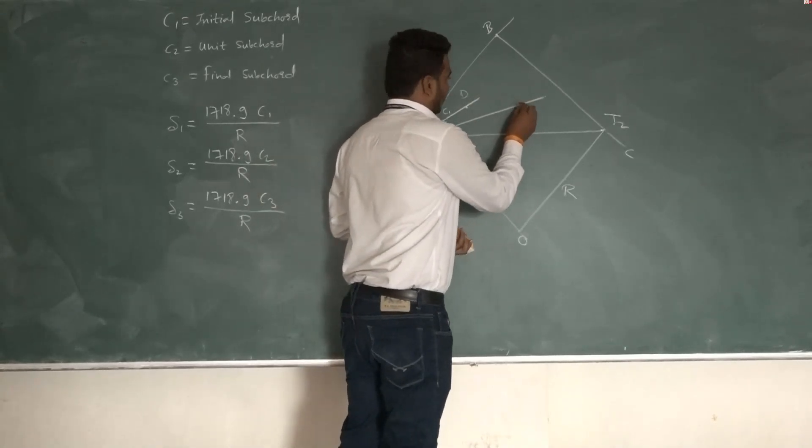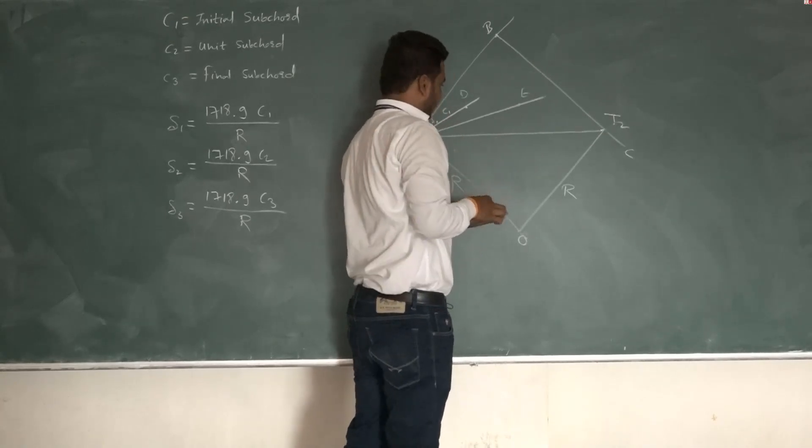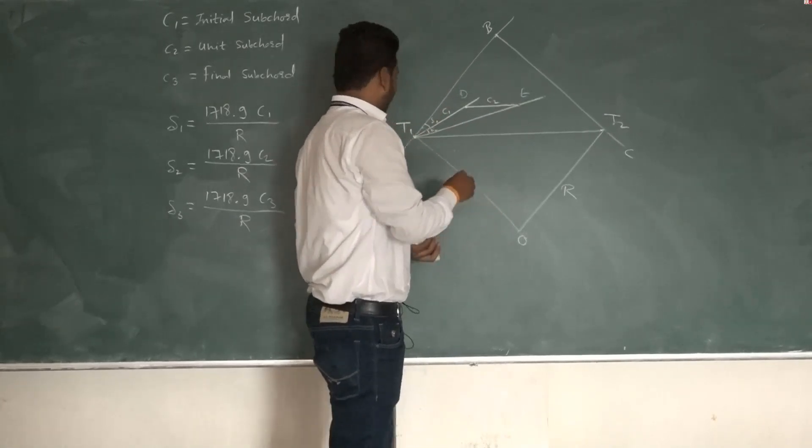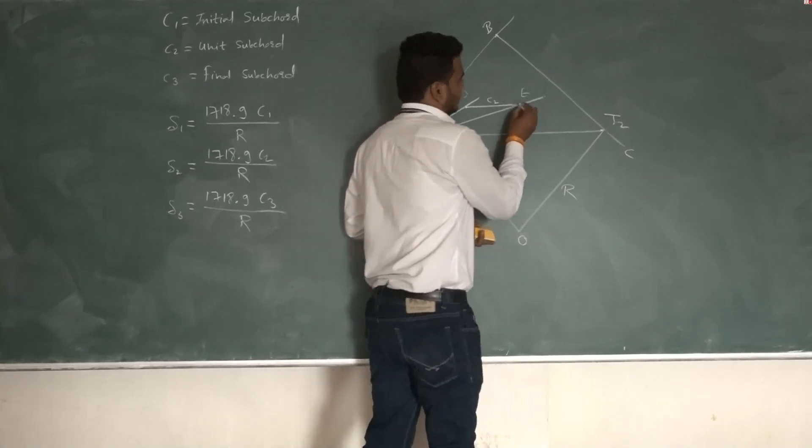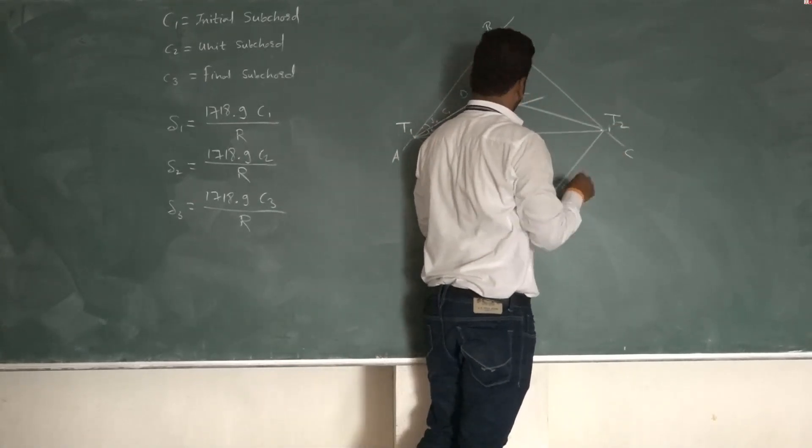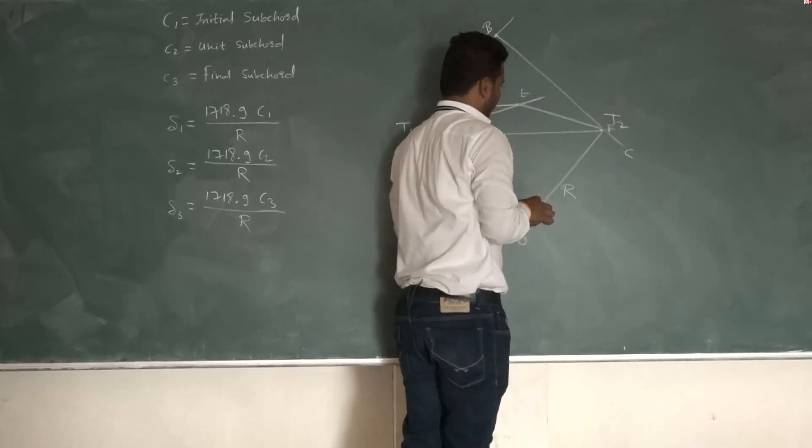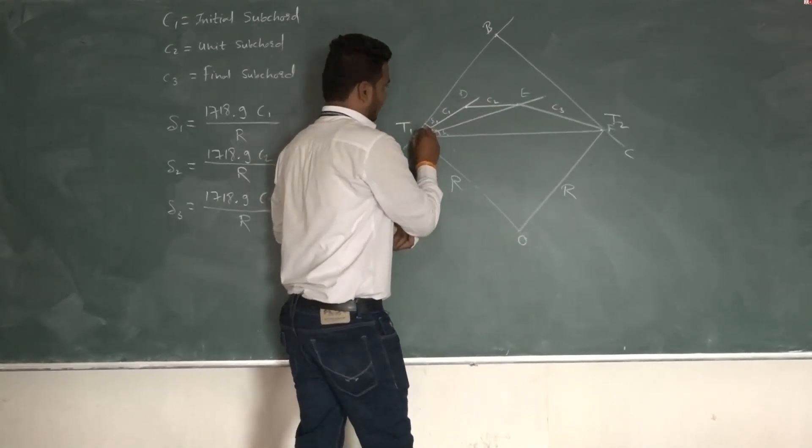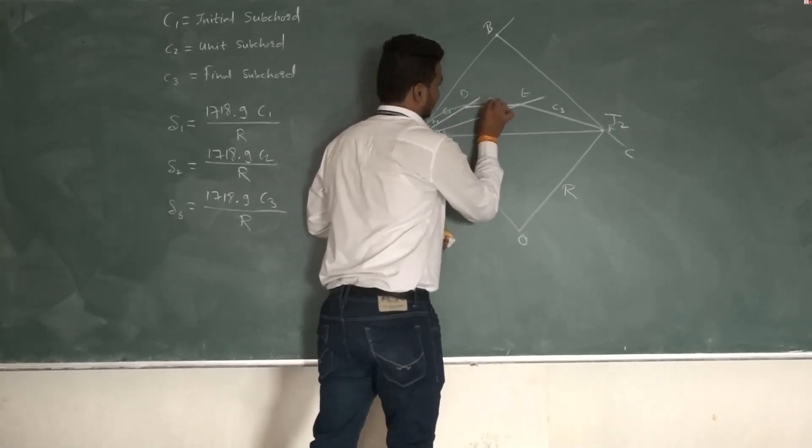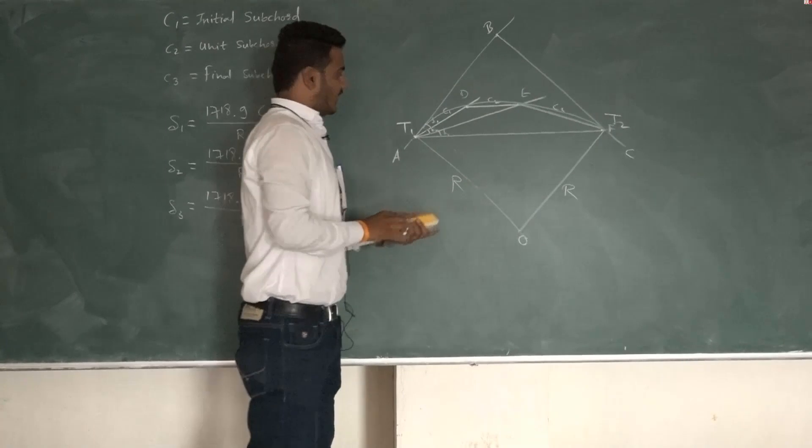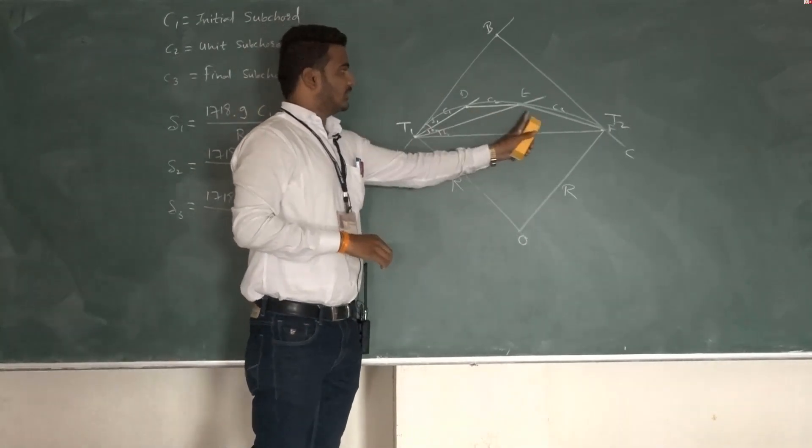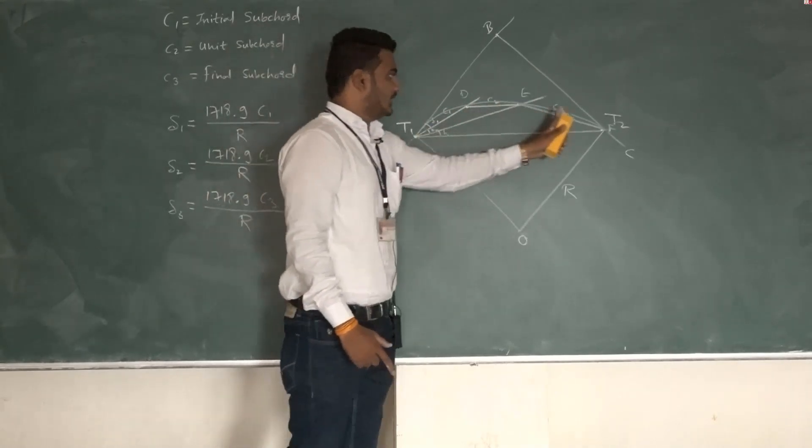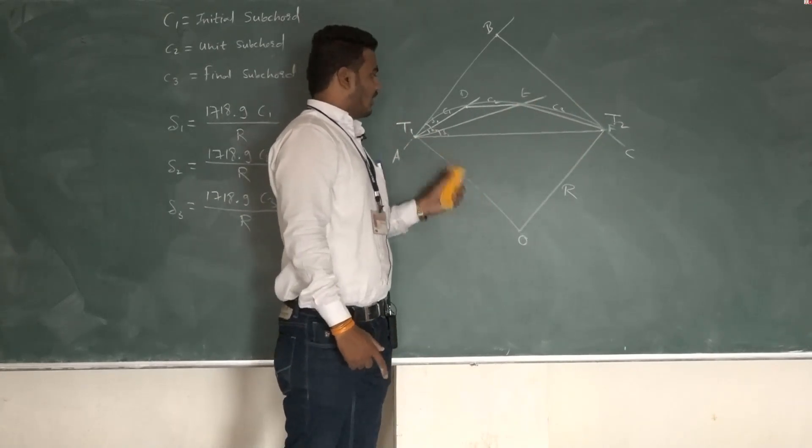Then on that line from station point D take point E at a distance of C2, then at angle delta 3 take station point F at distance C3. After connecting this point D and F we will get a curve of radius R with three sub chords C1, C2 and C3. That curve establishes T1 D E F, the curve established of radius R.